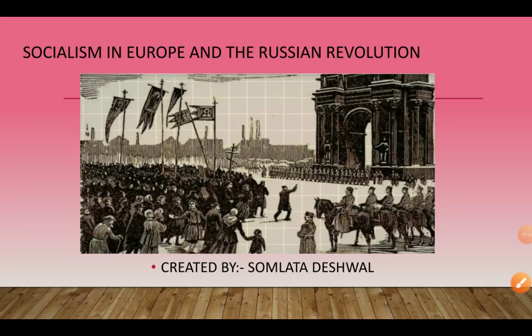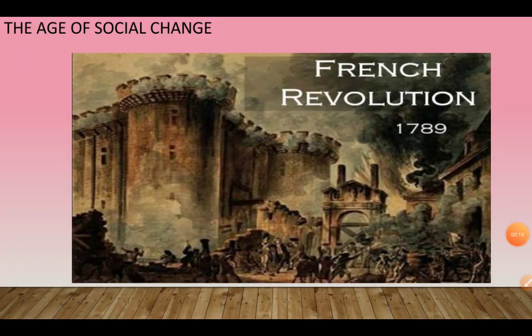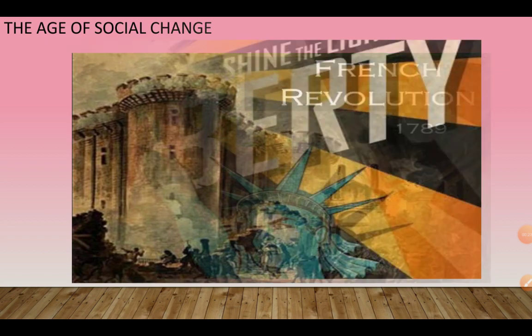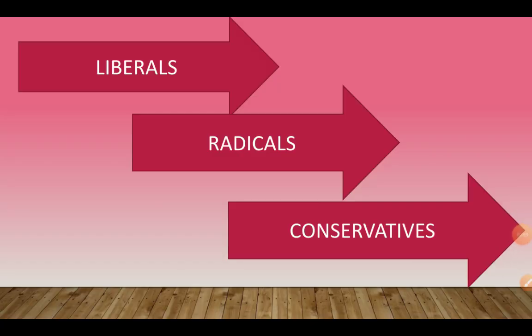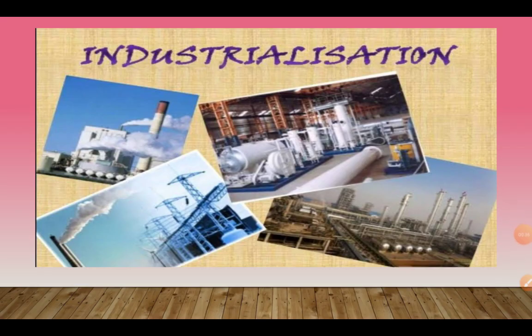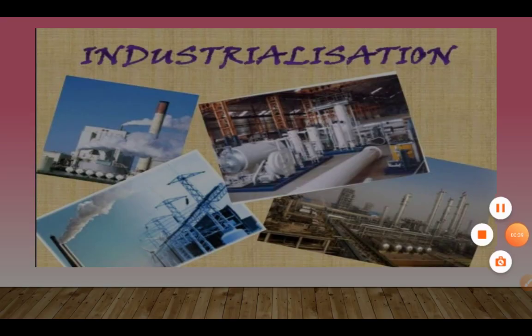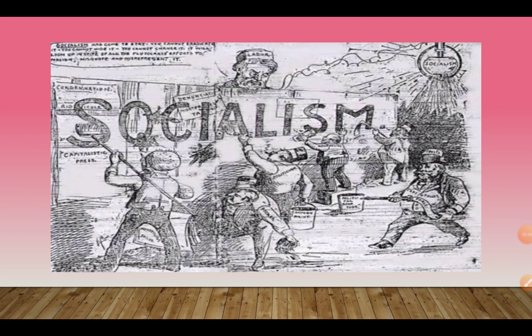Hello learners, welcome back to my YouTube channel. This is the second video from your history book, Chapter 2: Socialism in Europe and the Russian Revolution. In our last video we discussed the popular ideas of the French Revolution, the ideology of liberals, radicals and conservatives, industrialization and the workers' society, and the definition and idea of socialism and its impact on Russia and Europe.